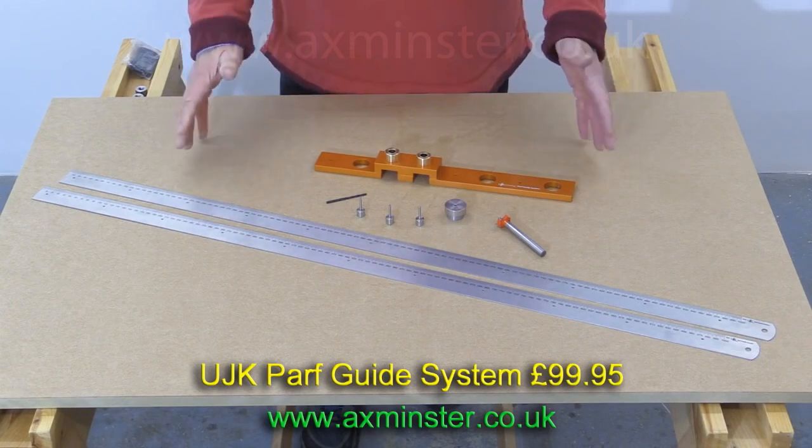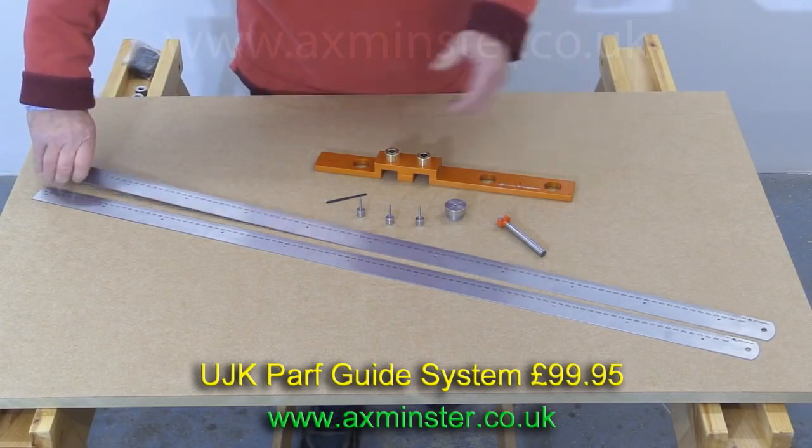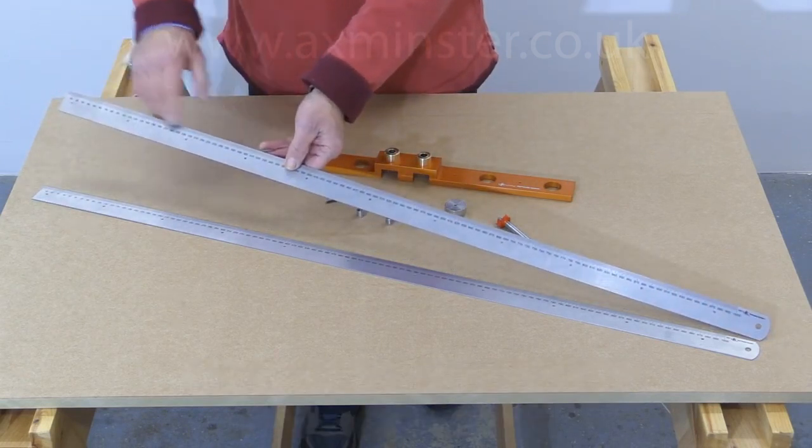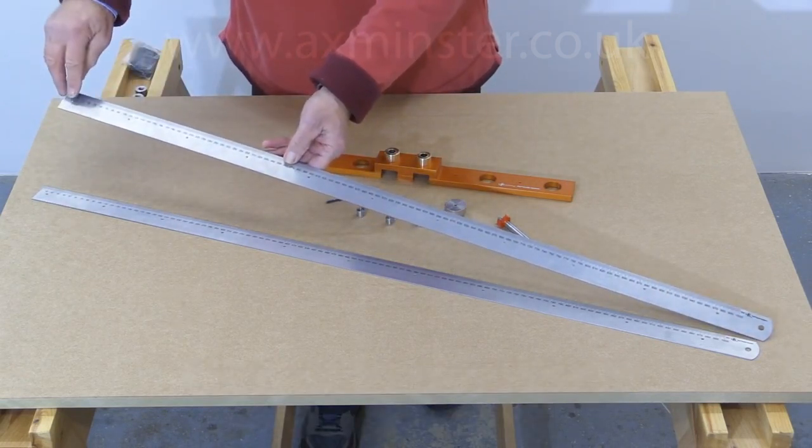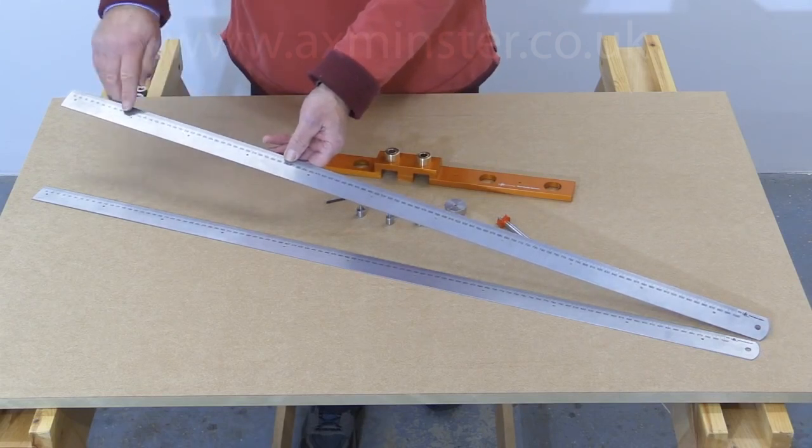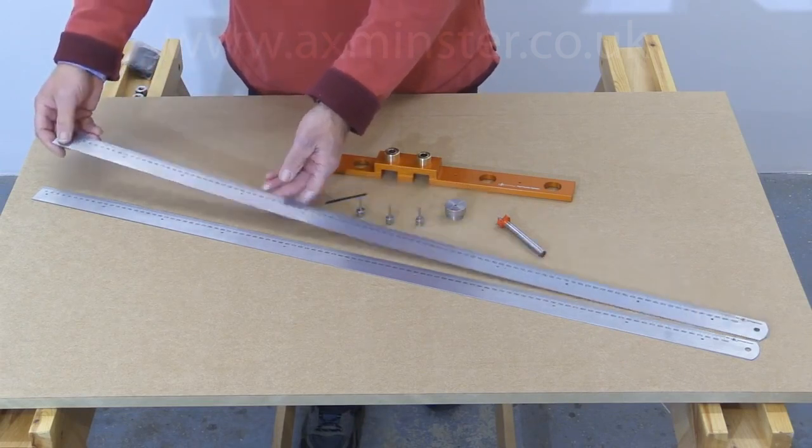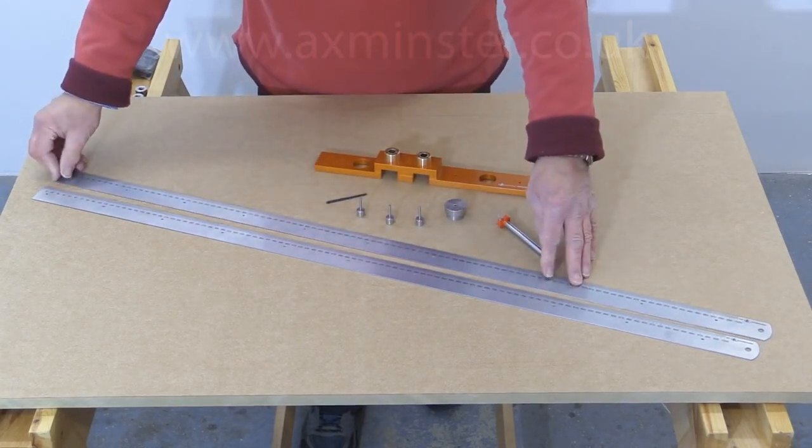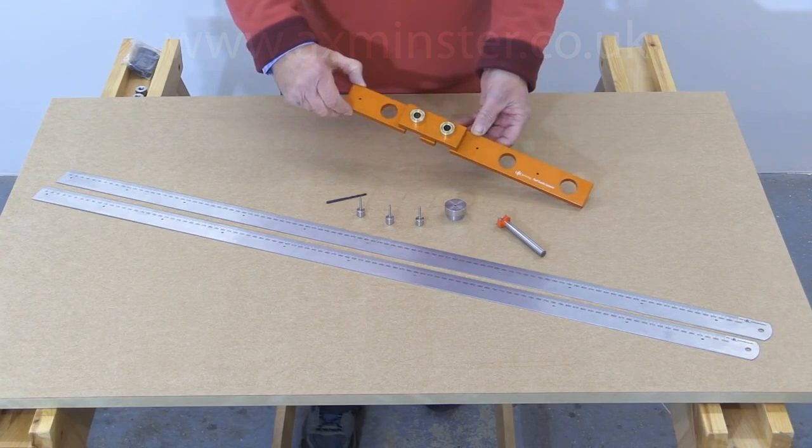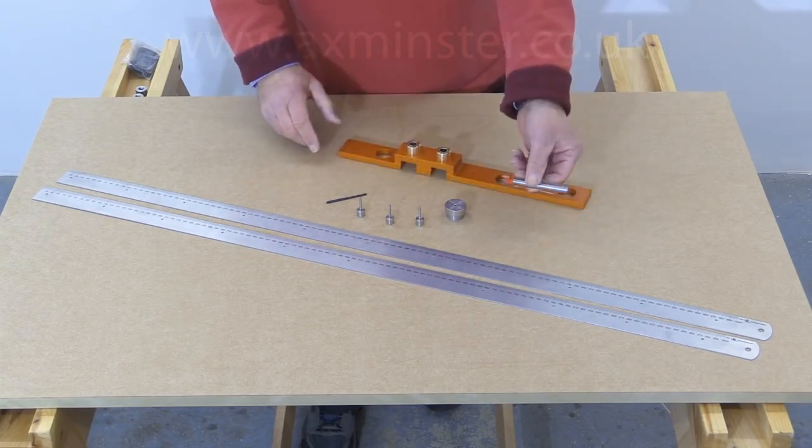Now, when you receive your UJK PathGuide system, this is what you get. You get a pair of steel rulers and they've got metric graduations and these have a CNC-created pattern of 3mm holes along their length. And these are at 96mm centres. You get a 20mm guide block. You get a 20mm drill.